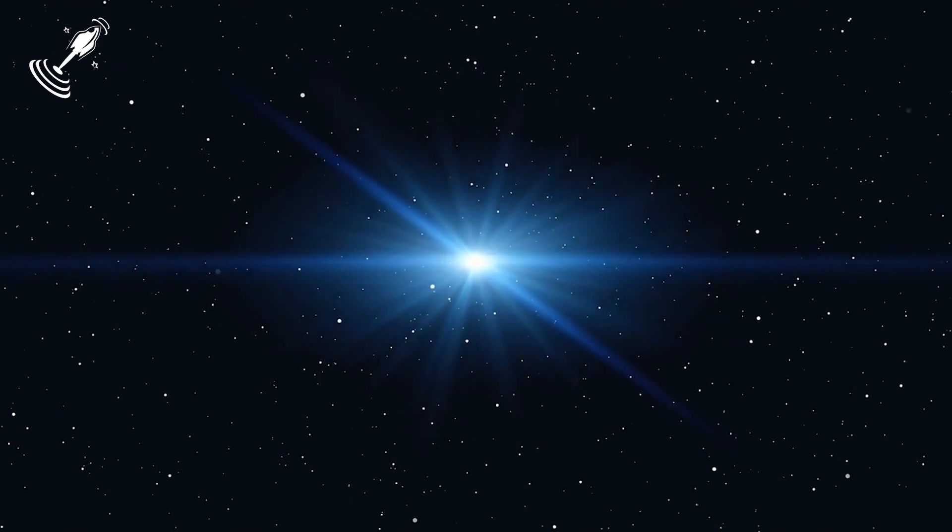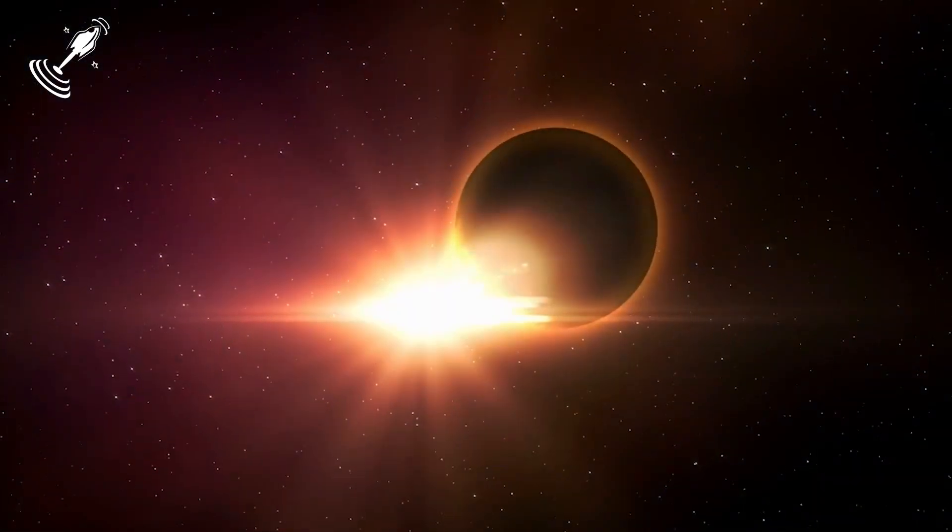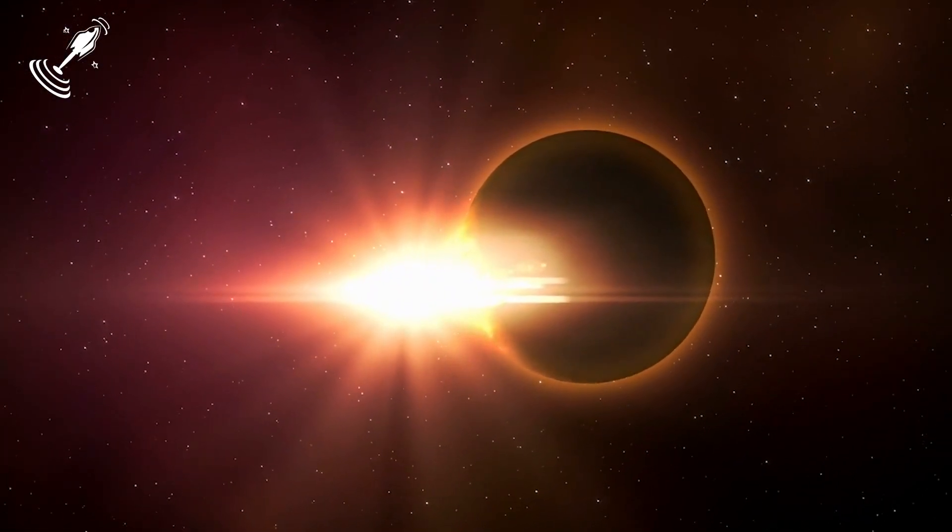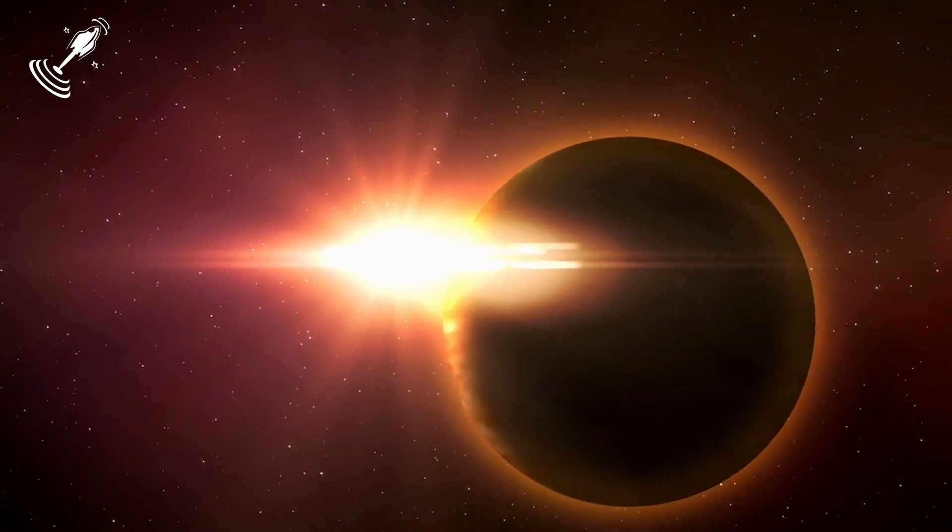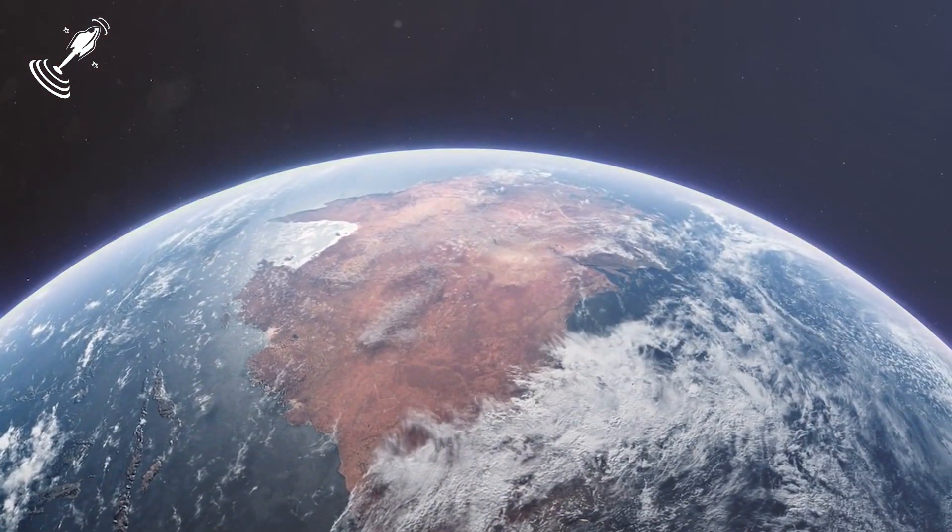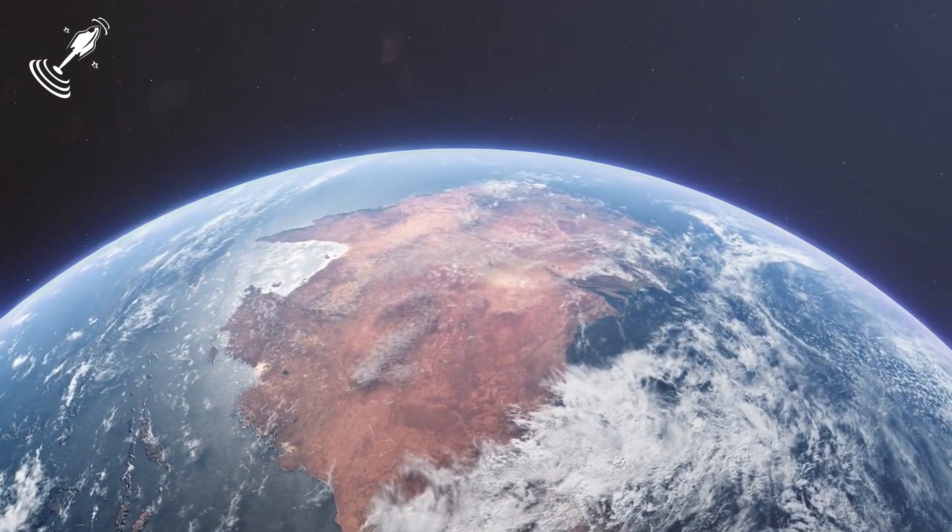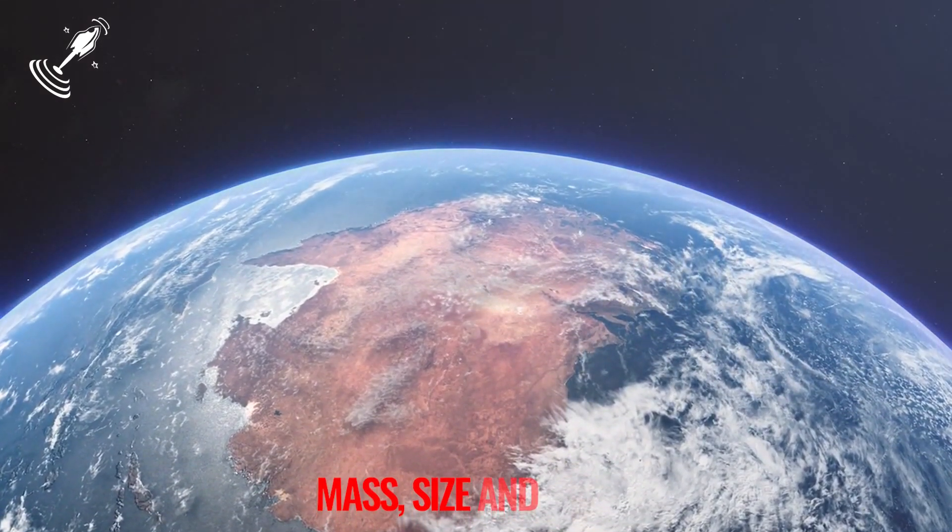That is because exoplanets are not pale blue dots, but small black shadows to us, and these Earth-like planets must be understood further. Such planets currently fit the criteria of an Earth-like planet as they mimic our planet in mass, size, and orbit.